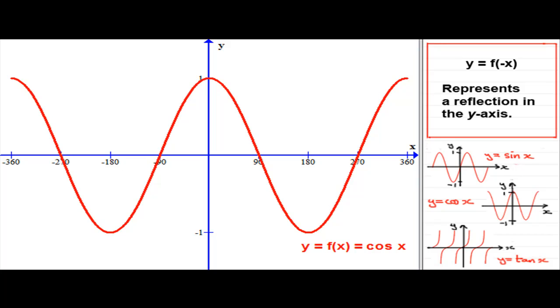And what we're going to do now is replace that x with a minus x. So we end up with y equals f of minus x, which is going to be the cosine of minus x. So you might like to pause the video and sketch in the reflection of this graph then in the y-axis. Okay. If you had a go, let's see how you got on.